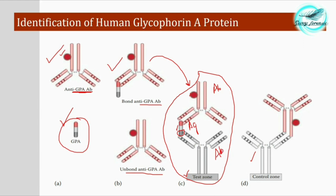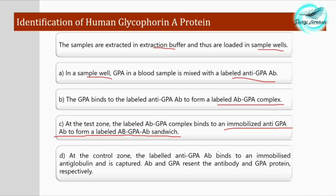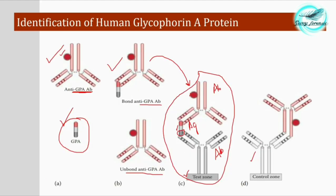At the control zone, the labeled anti-GPA antibody binds to the immobilized anti-globulin, which captures the unbound antibodies. This confirms that the antibody and GPA protein are present and functioning correctly. This is what happens in the control zone.